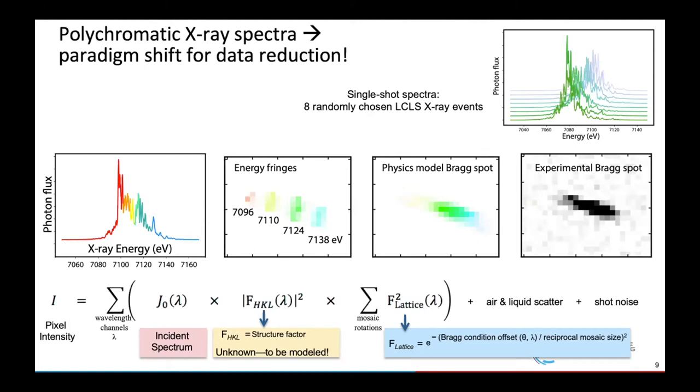This is just shown in an equation down here. The pixel intensity is really a sum over wavelength channels where the coefficients are the spectral intensities that we measure. The big unknown in yellow is the structure factor—that's what we're treating as an unknown quantity. The third factor is simply due to the rocking curve that I showed on the last slide.